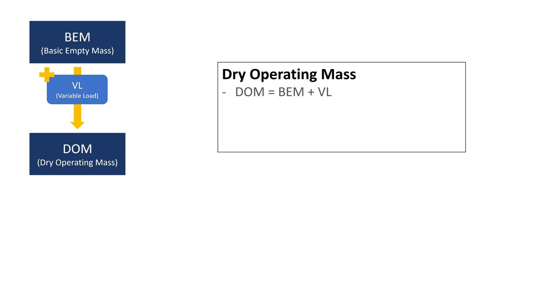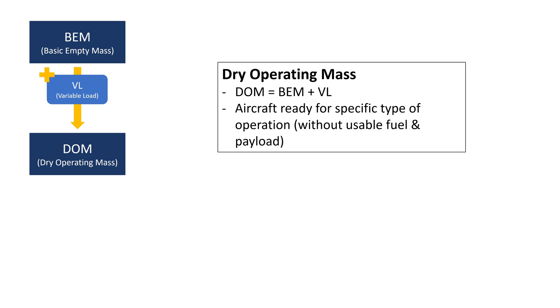The dry operating mass is the mass of an aircraft ready for a specific type of operation — say a plane ready to operate a passenger flight from Vilnius to Jeddah — but without any usable fuel or payload on board.